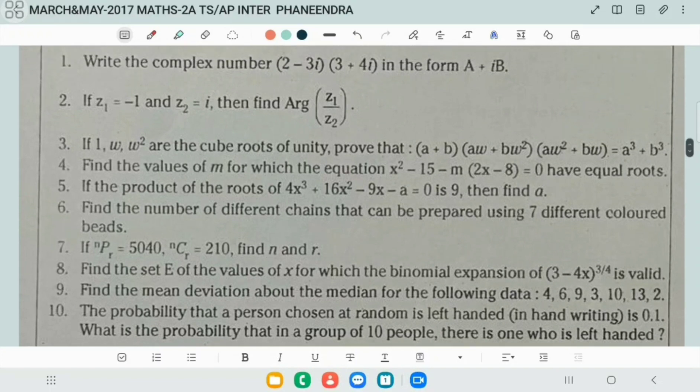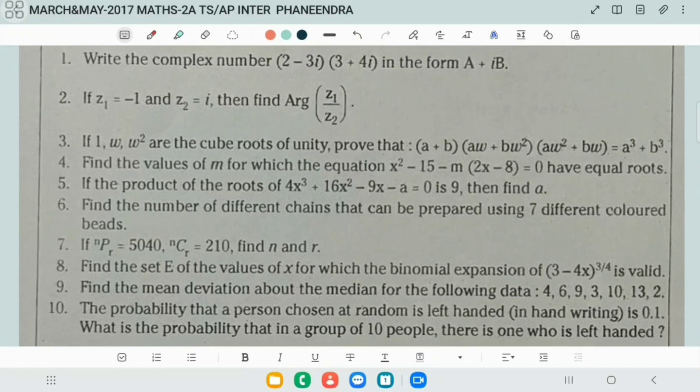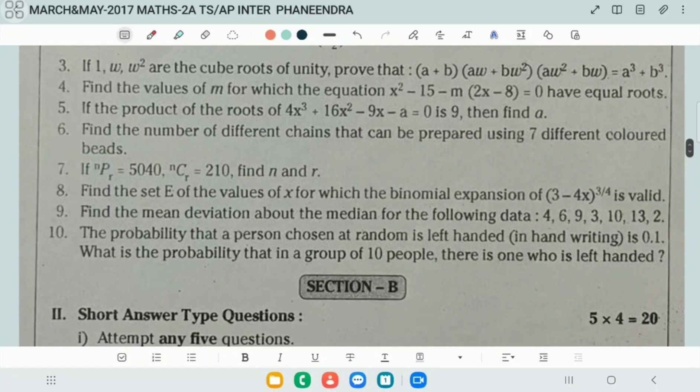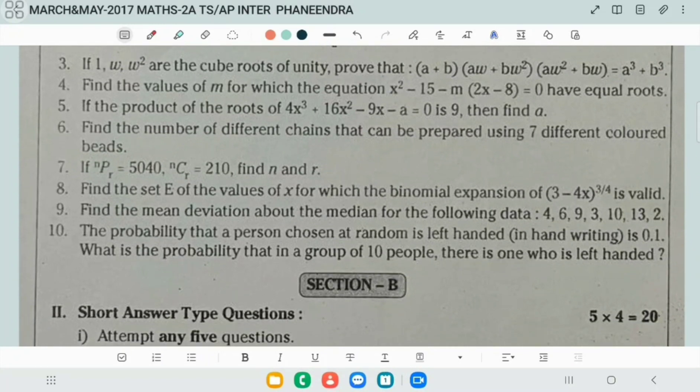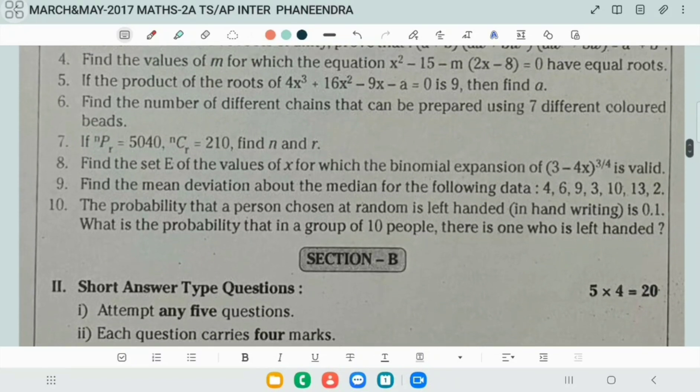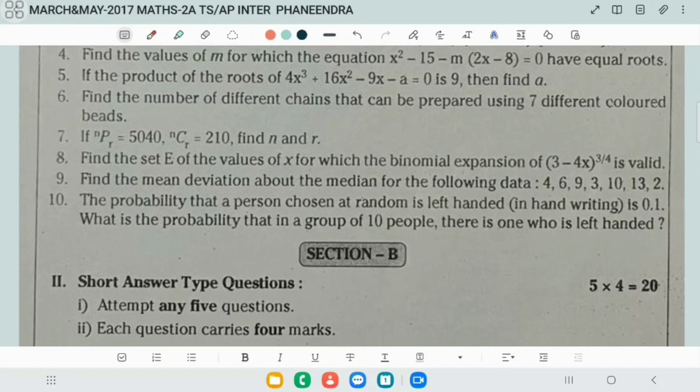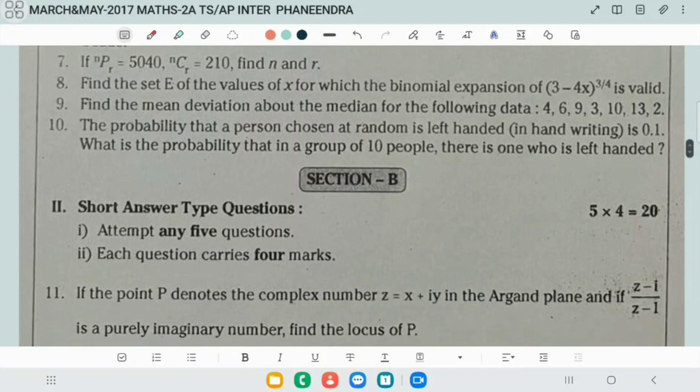First question here also complex numbers, two. First two questions, third one cube roots of unity, fourth one complex quadratic equation, fifth one theory of equations. Here permutation circular permutations are given in this question. Next permutation combination related question, NCR and PR related.